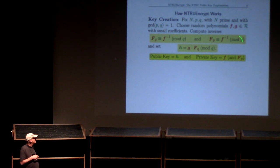She might want to save this F sub p also. It'll make decryption quicker. But she can always just recompute it as long as she knows little f.